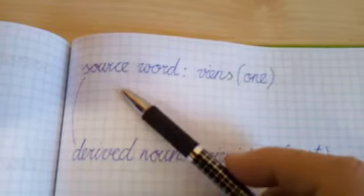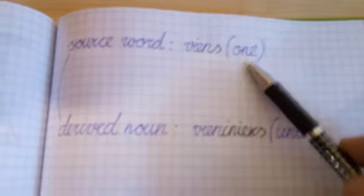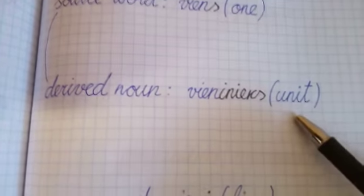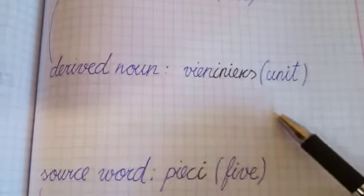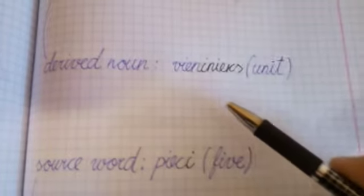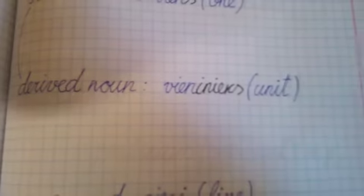Next source word, vience, one. Derived noun, vieninieks, it means unit. Removing s and adding inieks, it becomes unit, vieninieks. Only one gender.